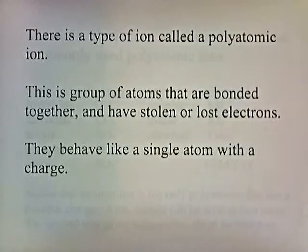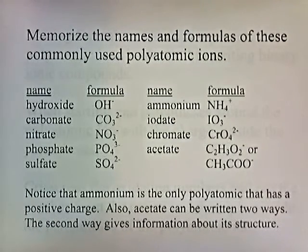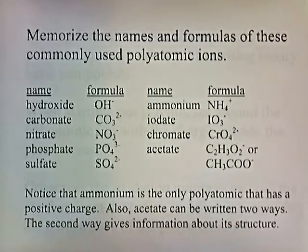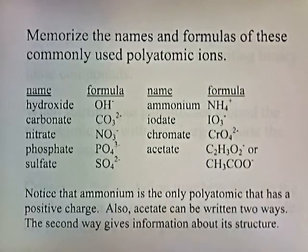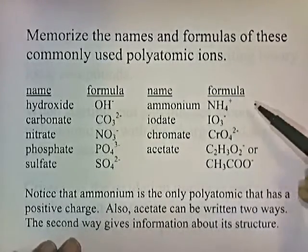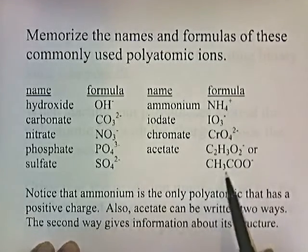There is a type of ion called the polyatomic ion — a group of atoms that are bonded together that have stolen or lost electrons, and they behave like a single atom with a charge. You need to memorize the names and formulas of commonly used polyatomic ions, just as you memorize the alphabet to read and write. Note that ammonium is the only polyatomic ion with a positive charge. Acetate can be written two ways; the second way, CH3COO−, gives information about its structure.